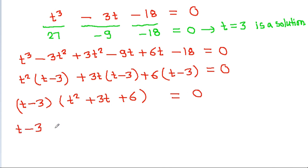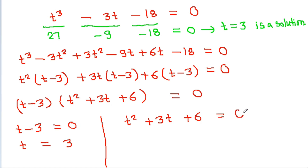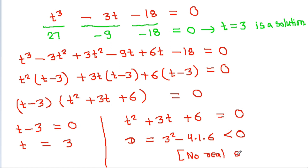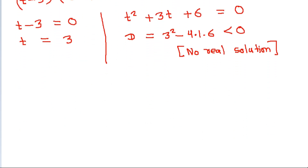So either t minus 3 equals 0, meaning t equals 3, or t squared plus 3t plus 6 equals 0. Checking the discriminant, it is 3 squared minus 4 times 1 times 6, which is negative. That means the quadratic has no real solution, and therefore t, which is x plus 1 by x, is equal to 3.